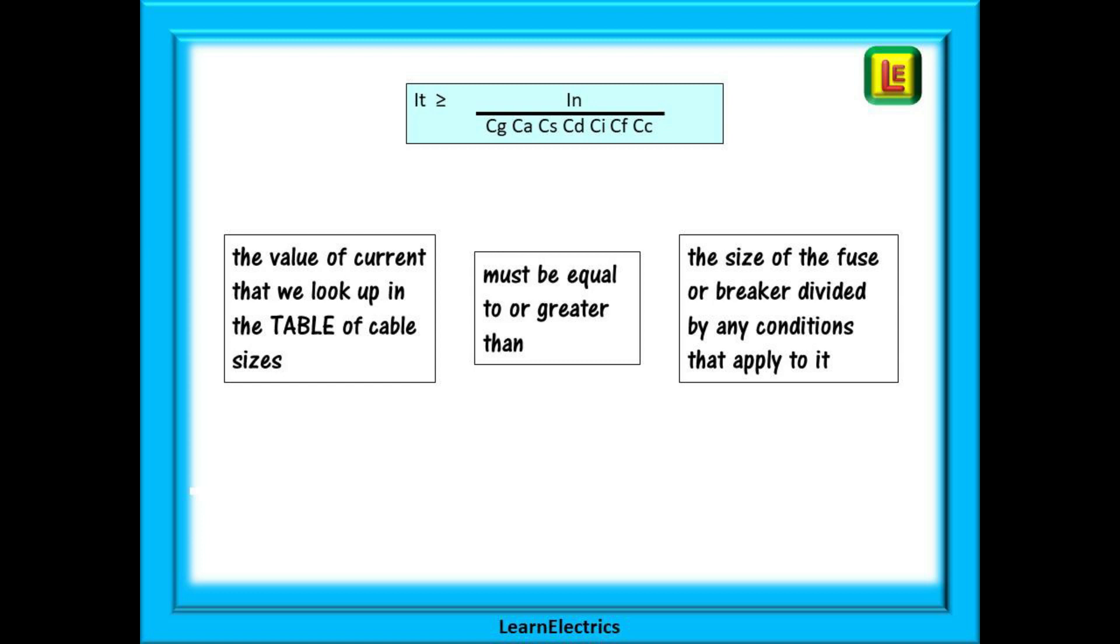It is the tabulated size and will tell us how big is big enough for the full load current. That funny mathematical symbol tells us that the tabulated size must be equal to or greater than the number that we work out with the formula on the right. And this number will be the size of the fuse or breaker called IN divided by all the rating factors or conditions that apply to it.